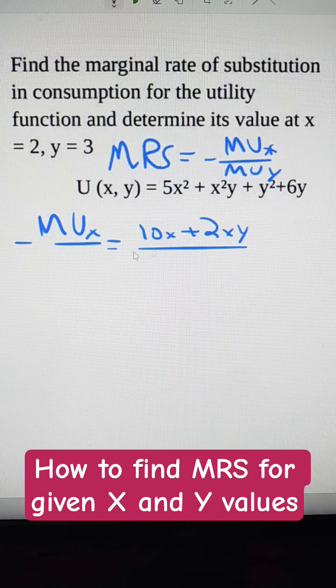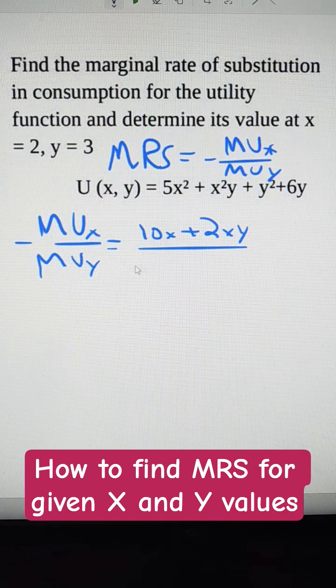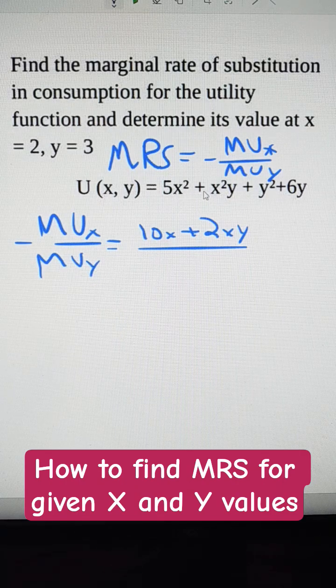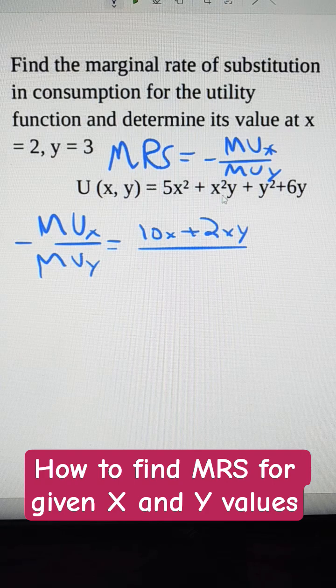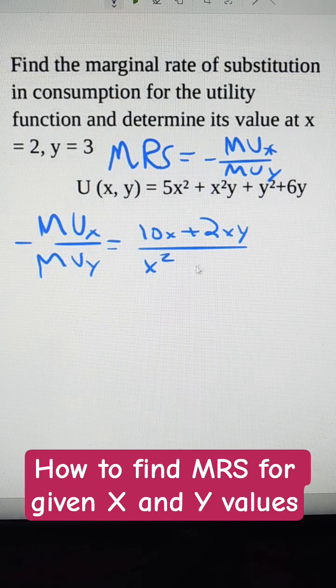Then the marginal utility for good y is the partial derivative with respect to y. So this is a constant. Then this would be just x squared.